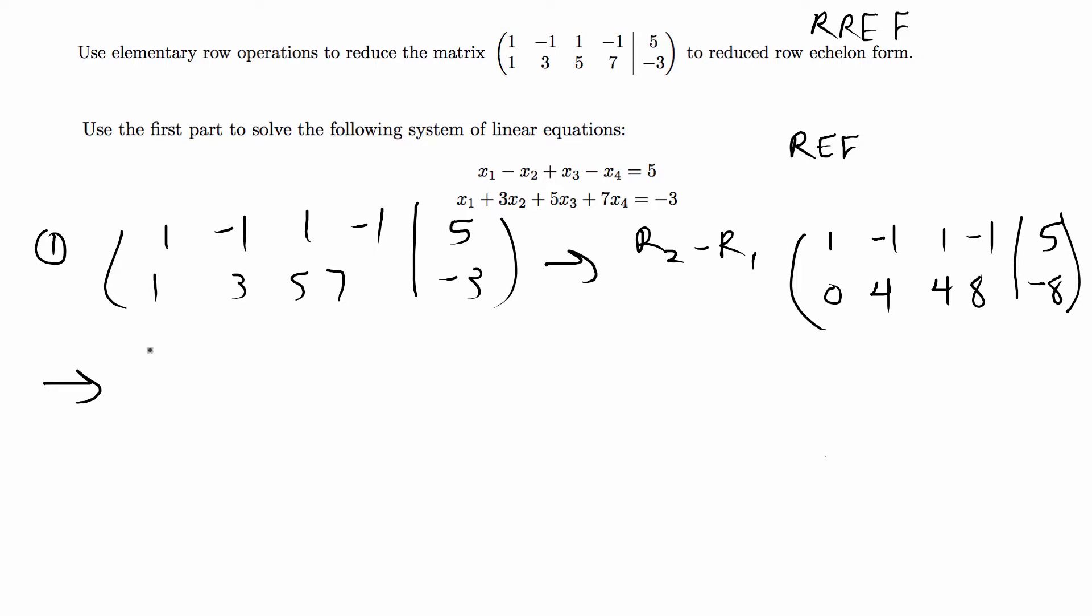To do that I did 1 quarter or 1 fourth times r2, and that gives 1, -1, 1, -1, 5, then 0, 1, 1, 2, -2.